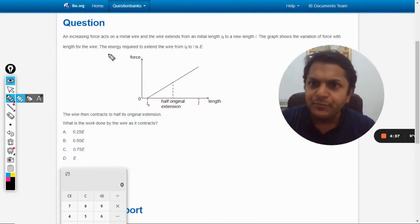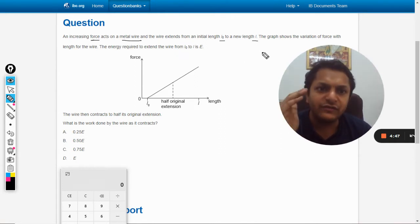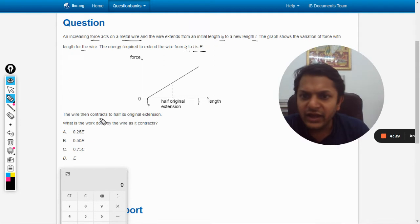In this question, an increasing force acts on a metal wire, and the wire extends from an initial length of L0 to a new length L. The graph shows the variation of force with the length of the wire. The energy required to extend the wire from L0 to L is E. The wire then contracts to half of its original extension.